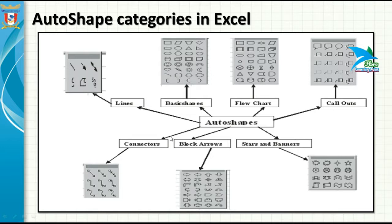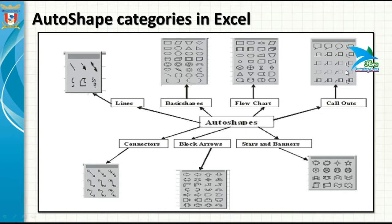The first category is Lines, which contains different types of lines like straight lines, arrow lines, and curved lines. Basic shapes are also available, like rectangles, smiley shapes, and more. The Flowchart category contains flowchart elements, and Callouts includes cloud symbols and many different types of callout symbols.